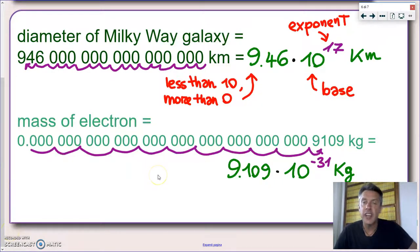And of course, if you take any physics textbook, if you look online, you will never find, well, it's very unlikely that you will find these two physical quantities written this way, for reasons that I hope now are pretty obvious. You will find them, on the other hand, written this way, in the case of the diameter of the Milky Way galaxy, or this way, in the case of the mass of an electron.